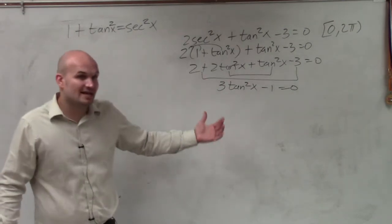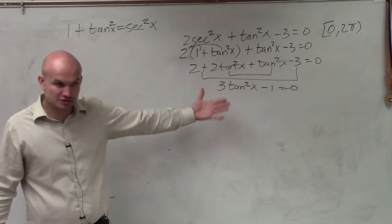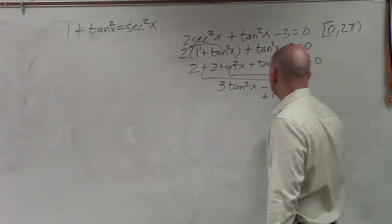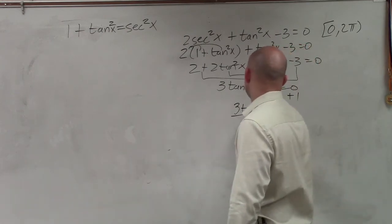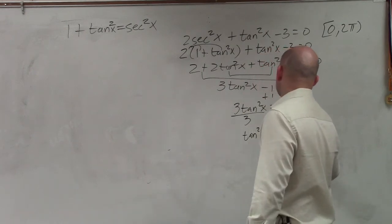So now let's isolate the trigonometric function. To do that, let's use our inverse operations. Just forget about the tangent, let's just get this by itself. So I add 1 to both sides. 3tan²x = 1. Divide by 3. tan²x = 1/3.